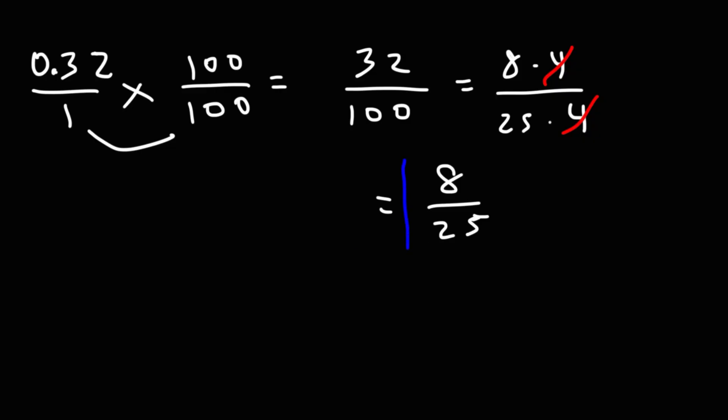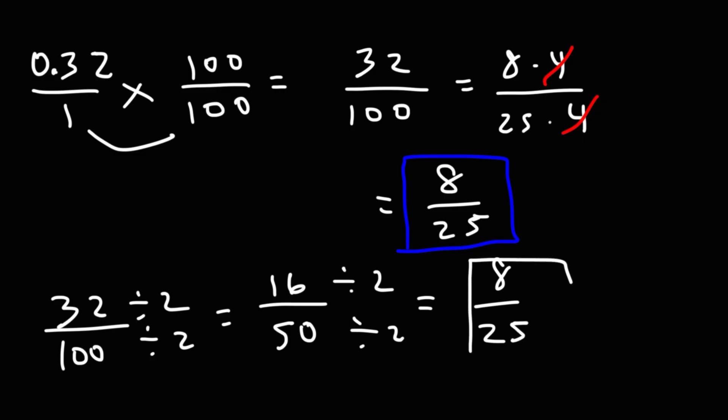By the way, for those of you who don't like to simplify fractions that way, something you can do is, if you have even numbers, you can divide top and bottom by 2. Half of 32 is 16. Half of 100 is 50. Now, they're still even, so you could divide by 2 again. 16 divided by 2 is 8. 50 divided by 2 is 25. At this point, we can't simplify it any further.